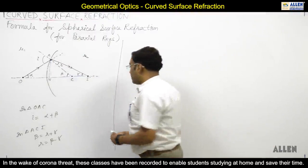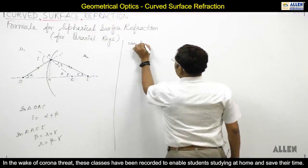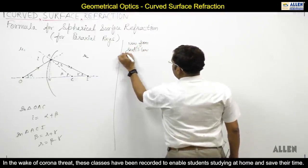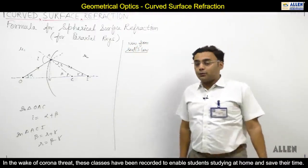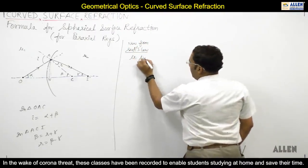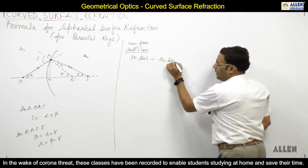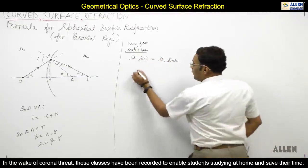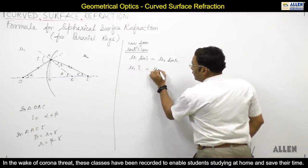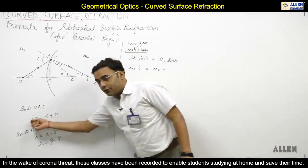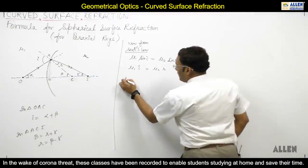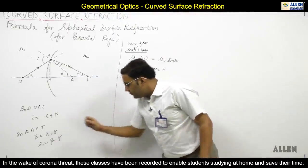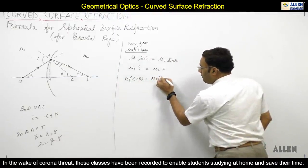Now, since this is refraction, I will apply Snell's law. From Snell's law: μ1 sin i = μ2 sin R. Since the angles are small, this becomes μ1·i = μ2·R. Substituting i = alpha + beta and R = beta - gamma: μ1(alpha + beta) = μ2(beta - gamma).